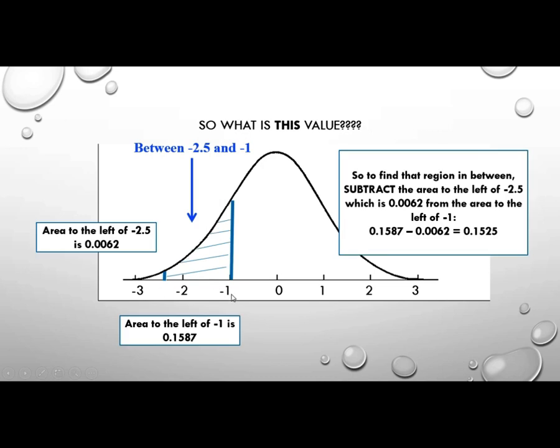So what do I do? I'm going to go and I'm going to look up the area to the left of 2.5 and I get this bit. To the left of 2.5, that's 0.0062. And then I can look at the area to the left of negative 1 and I get 0.1587. So to find the area here is I'm going to take this little tiny piece, this little piece, away from all of this distance. So to find the region in between, we subtract the area to the left of negative 2.5, which is 0.0062 from the area to the left of negative 1. So I do this calculation and I get 0.1525.